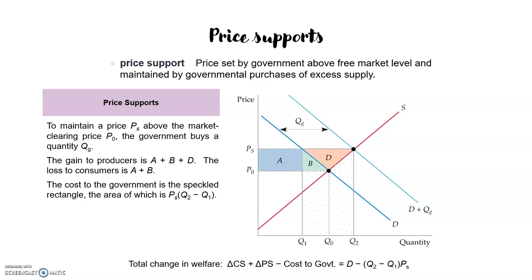In effect, the government adds its demand qg to consumer demand, so producers can sell all they want at the price PS. Consumers who purchase the good have to pay the higher price PS instead of p0, which is the market clearing price, and so they suffer a loss of consumer surplus given by rectangle a.